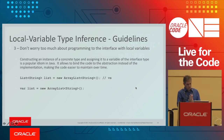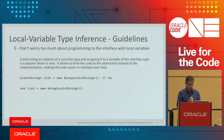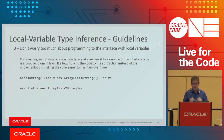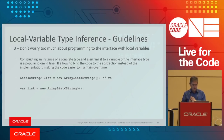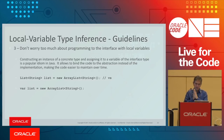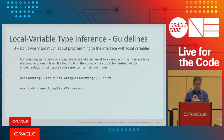Guideline three: don't worry too much about programming to the interface. It's a common Java idiom to construct a concrete type and assign it to an abstract type. For example, constructing an ArrayList and assigning to a List. But sometimes in a complex hierarchy you don't know the right abstract type to use. Using var simplifies this case quite a bit.